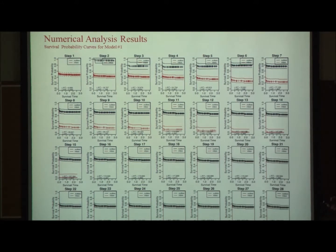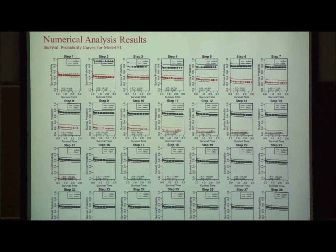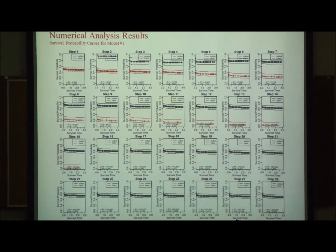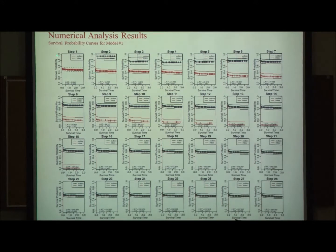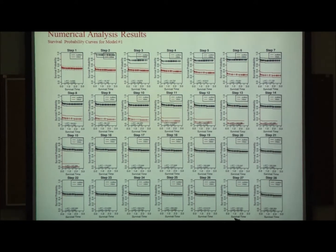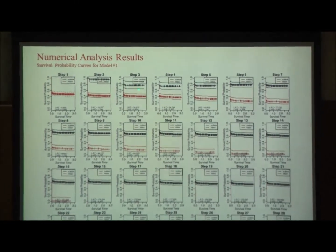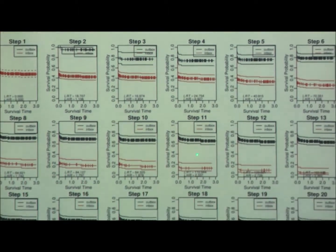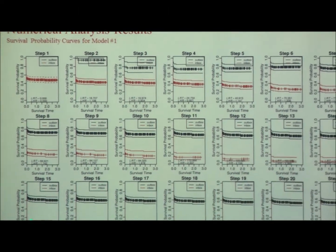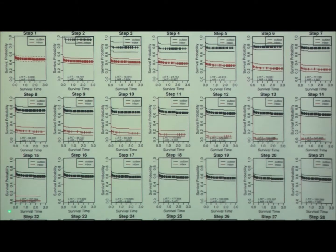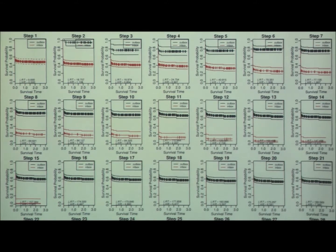These are the corresponding Kaplan-Meier estimates of the survival distributions for each peeling step. We had 28 steps. At the beginning, everything is in the box, and then you see a second group forming as you peel. At some point if you go too far down, your support is too small and you don't have enough data in the box. So there are overfitting issues to address.